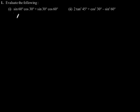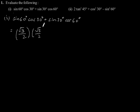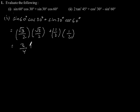Exercise 8.2, question number 1: evaluate the following. First is sin 60° · cos 30° + sin 30° · cos 60°. Putting in the values: sin 60° is √3/2, cos 30° is √3/2, plus sin 30° is 1/2 and cos 60° is 1/2. This equals 3/4 + 1/4, which equals 4/4.